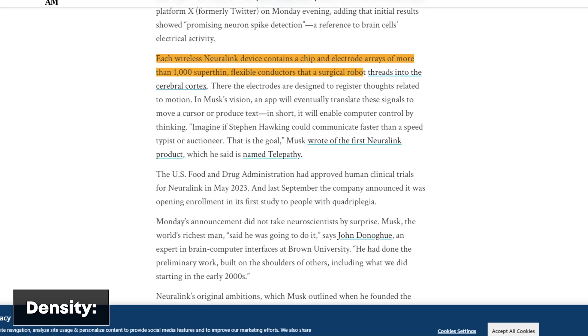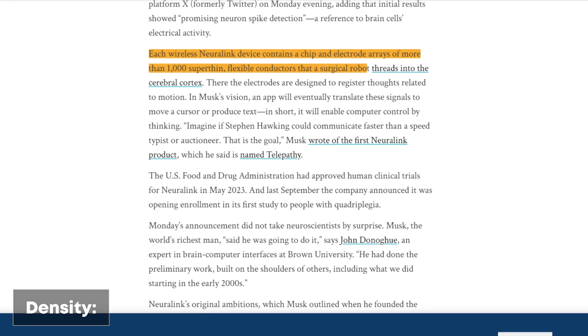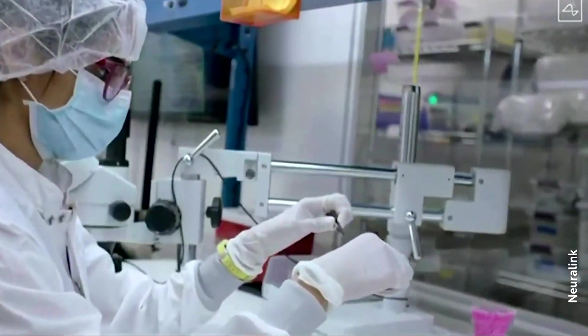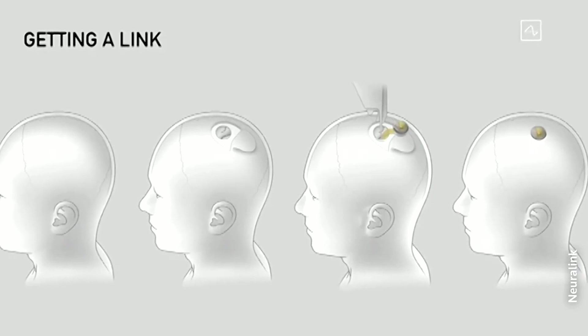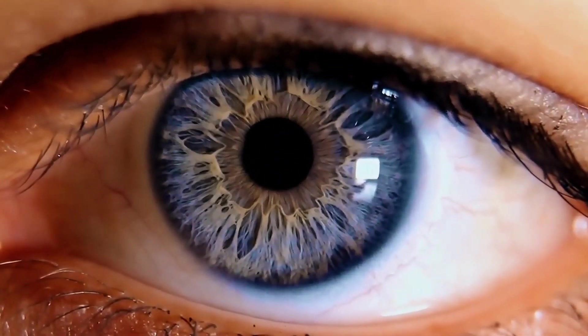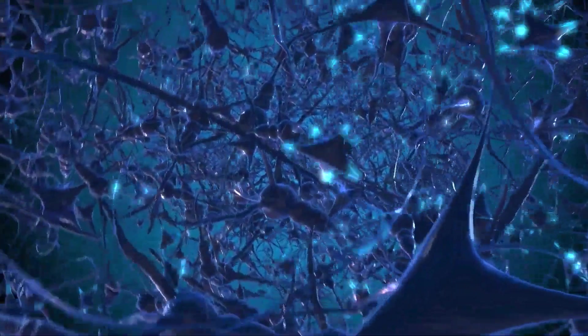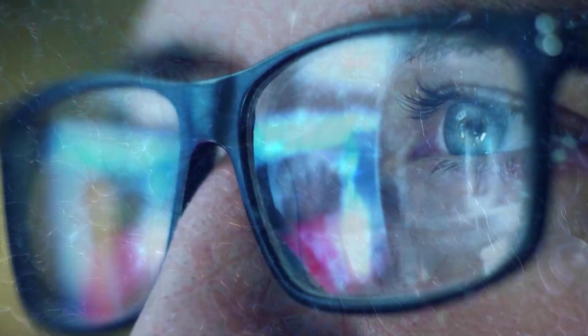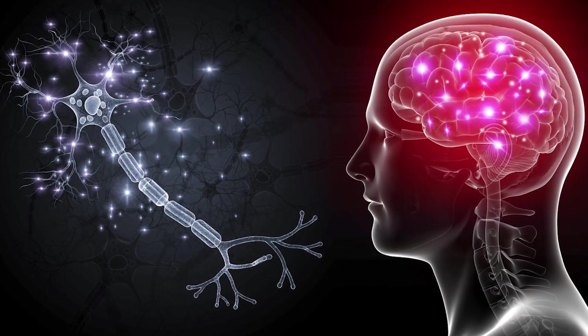Density: Current Neuralink devices boast an impressive array of up to 1,000 electrodes, with ambitious plans to scale this to 3,000 or even 16,000 in the near future. This high electrode density is a game changer for visual prosthetics. More electrodes translate directly to higher resolution vision, potentially allowing users to perceive finer details and more complex visual scenes.